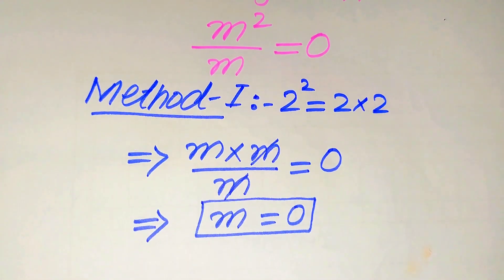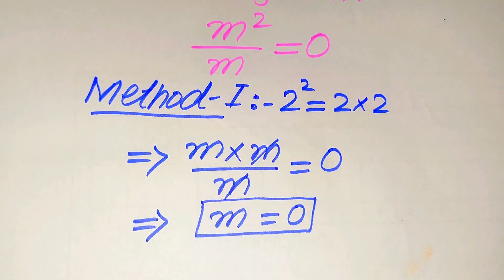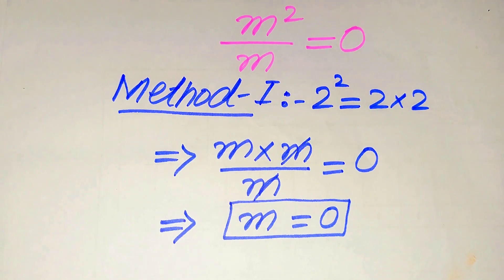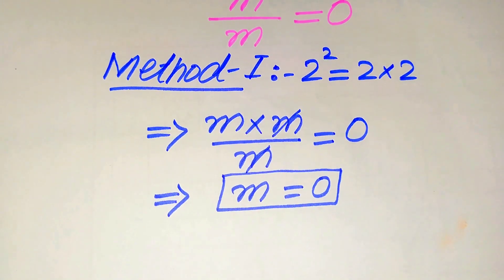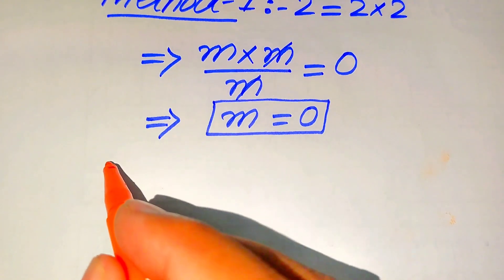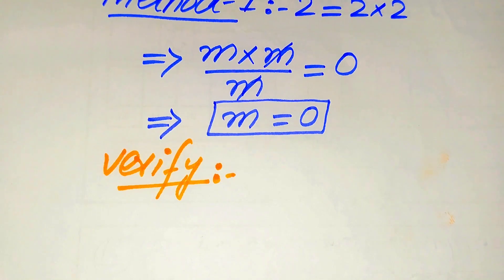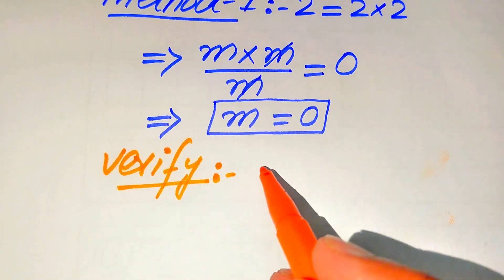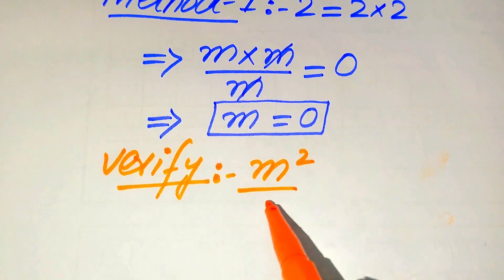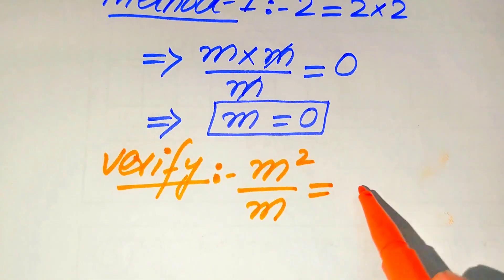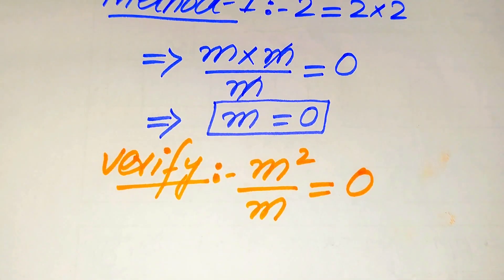So this is the first real root of the given equation. Now we check whether this root is the solution of the given equation, or whether it is an extraneous root. For this we need to verify whether this root satisfies our given question statement. To do so, we first copy down the given question statement: m squared divided by m equals 0.